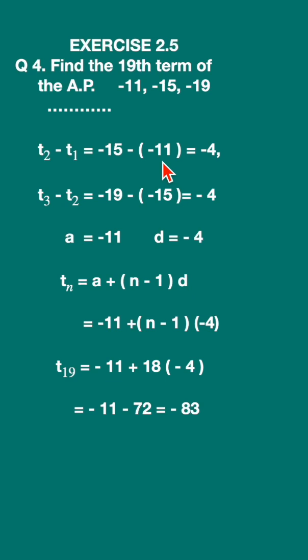That will be minus 15 minus of minus 11. Open the bracket, minus 15 plus 11, that is minus 4.